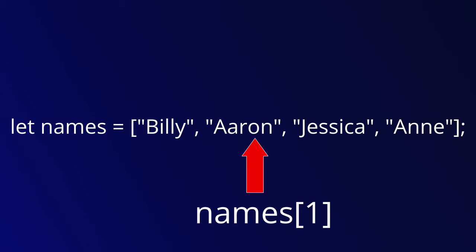Notice how the first index in the array is 0. This is because computers start counting at 0, unlike how humans typically start counting at 1. This might take some getting used to, but it's important to remember. You'll see more of this type of counting whenever we discuss loops.